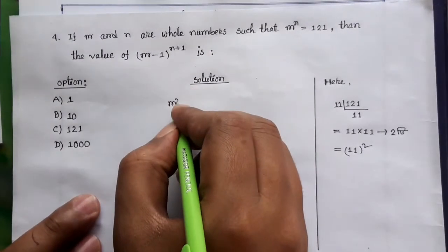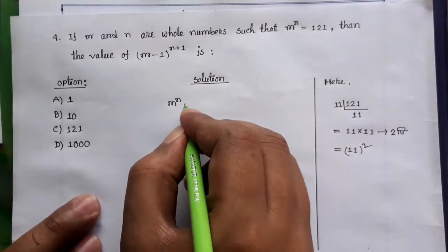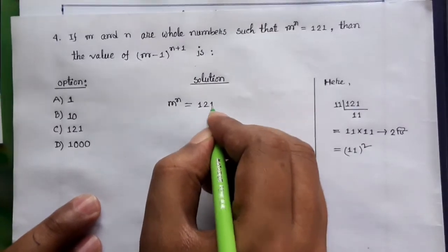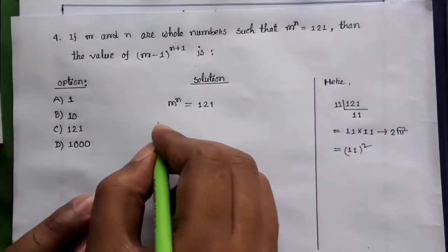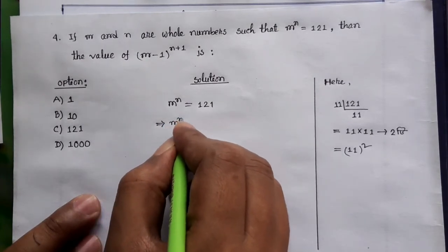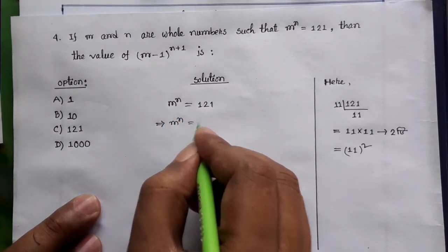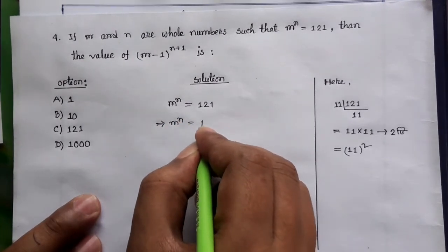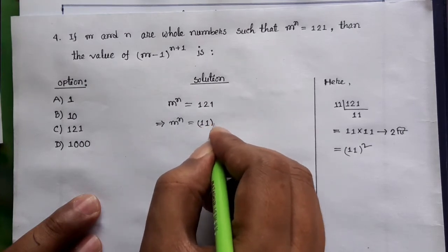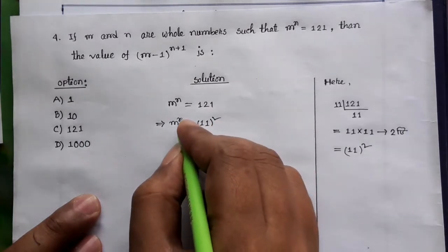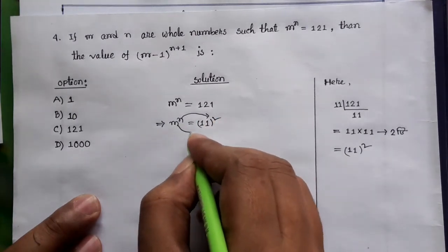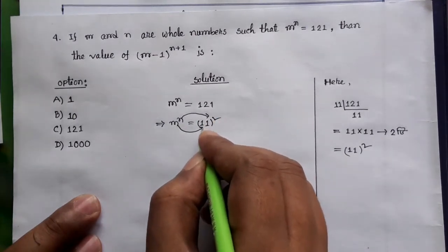M to the power N is equal to 121. So, M to the power N is equal to 11 squared. Therefore N is equal to 2 and M is equal to 11.